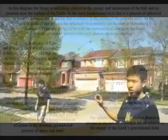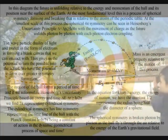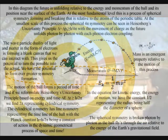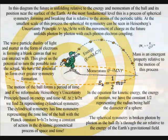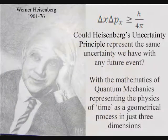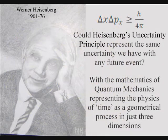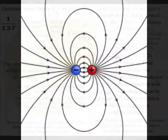At the smallest scale of this process, the spherical symmetry can be seen as Heisenberg's uncertainty principle, with the movement of charge as the future unfolds photon by photon.